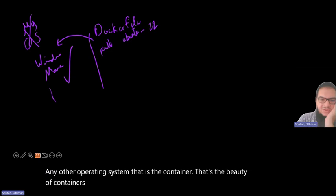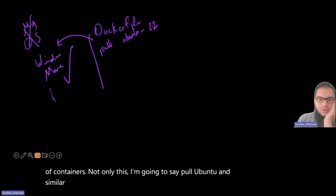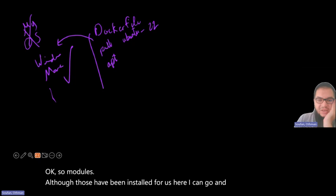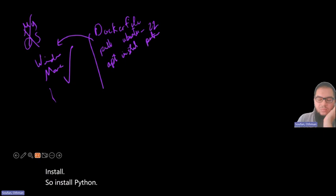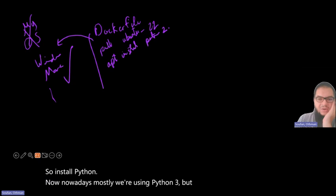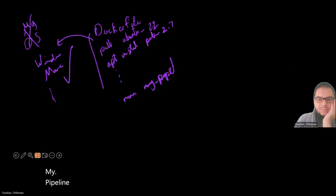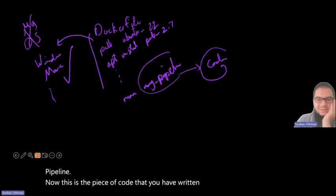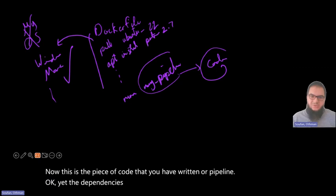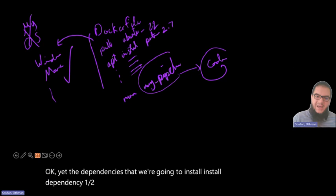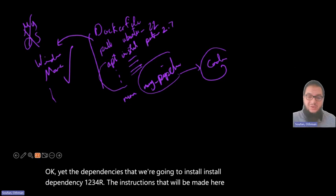Not only this — I'm going to say pull Ubuntu, and similar to 'module load' that we use in discovery to load some modules, I can go and say 'apt install' — install Python. Nowadays mostly we're using Python 3, but I'm going to require Python 2.7 here. And then I'm going to call my program, run my pipeline. This is the piece of code or pipeline you have written. The dependencies to install are the instructions that will be made here. So every time we run the Dockerfile, this would be executed again and again, but it's lighter than running a virtual machine.